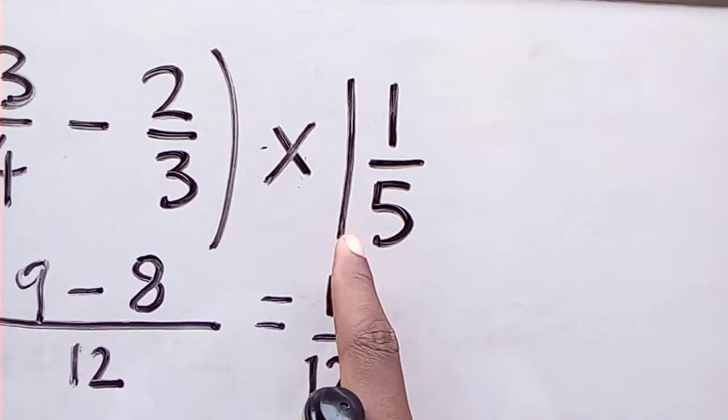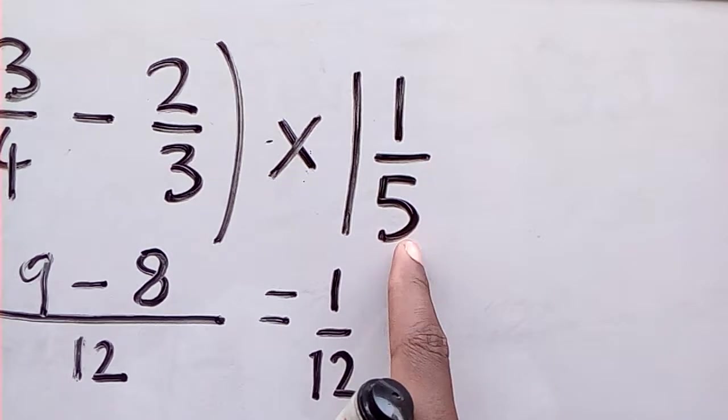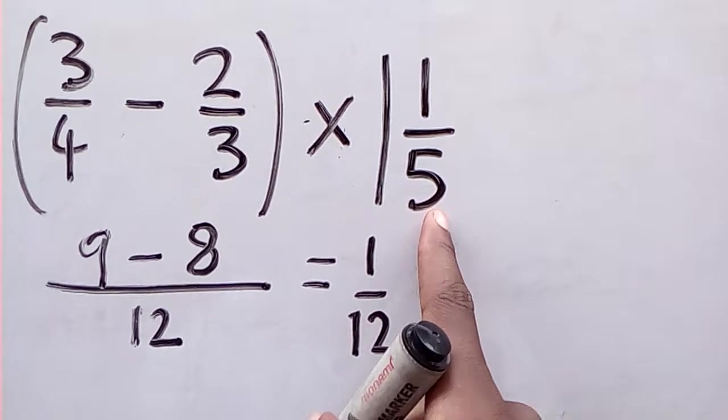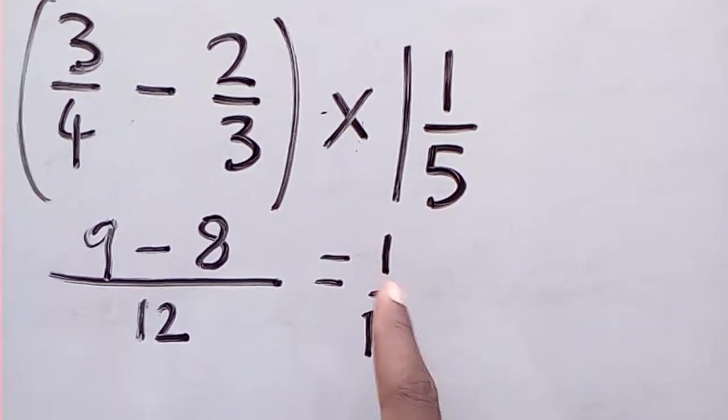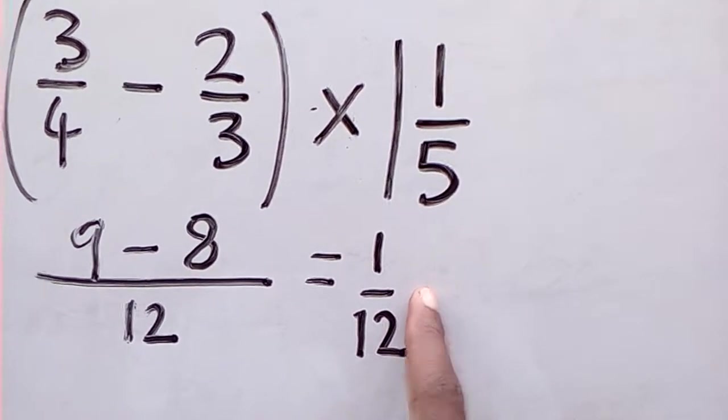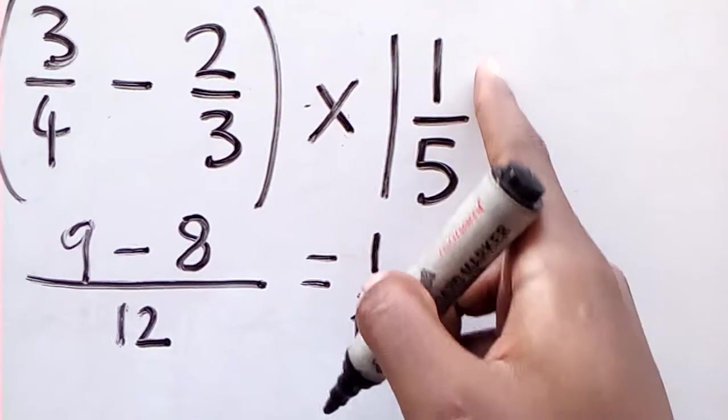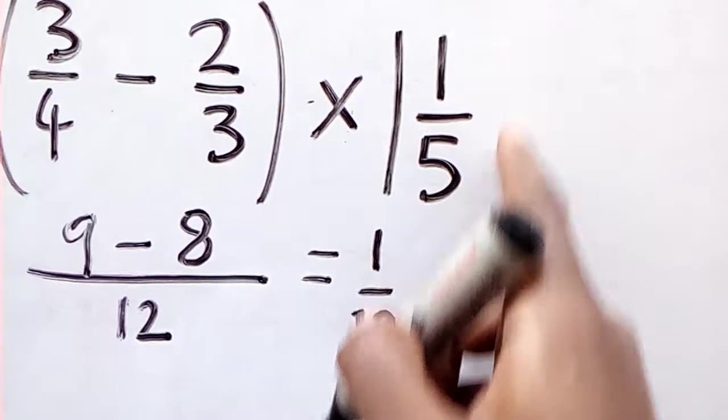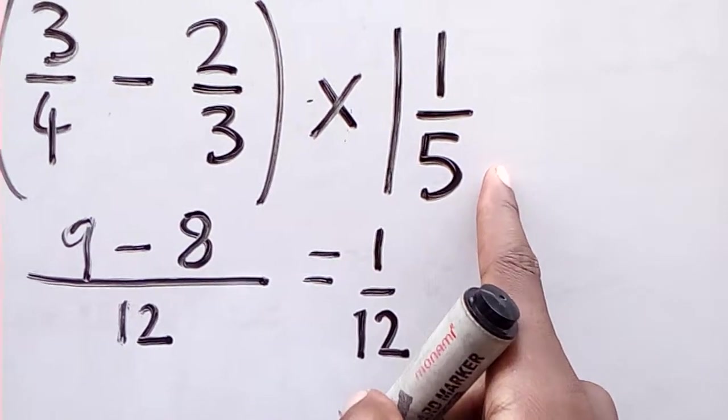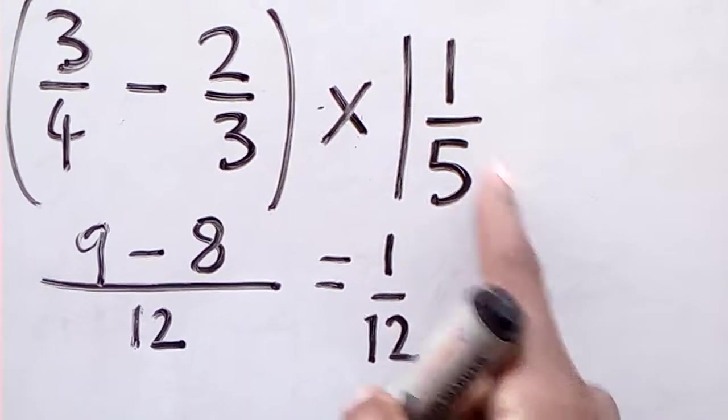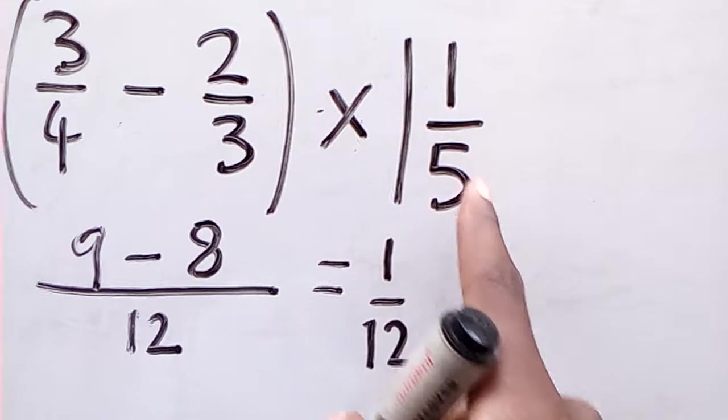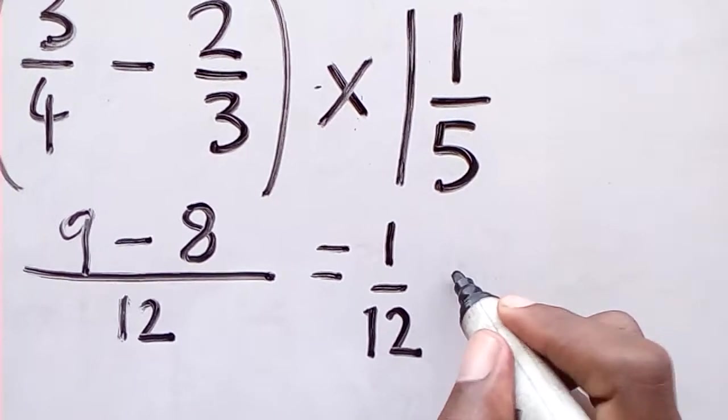We have one whole number 1 over 5 as what we'll be multiplying by. I'm going to be multiplying it by this, which leads me to turning this mixed number into an improper fraction. It's a mixed number because you have a whole number and a fraction there.